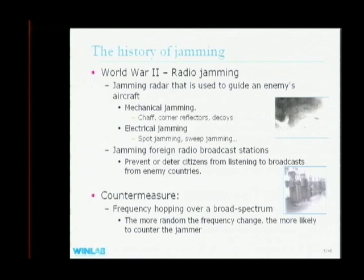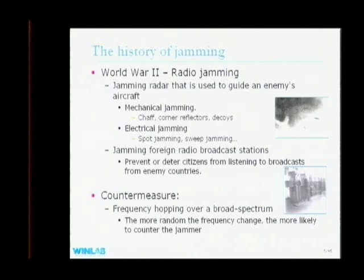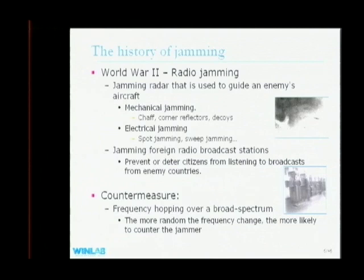Jamming has a long history. The earliest related jamming is radio jamming in World War II, when radar was widely used to detect enemies and attack targets. People used mechanical and electrical jamming techniques to block radar. The chaff shown here — a white cloud consisting of small aluminum strips — is one type of mechanical jamming. Those strips reflect radar waveforms, producing false targets on the radar scope so the radar can't distinguish real targets.